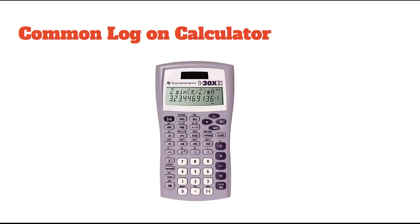Where is that button on the calculator? On this TI calculator, right below the second button in the upper left-hand corner, there is a LOG button. That is the common log button. That button does not have a base on it, and LOG stands for logarithm. So anytime you want to do a common log, use that button, type in the number that you want to take the log of, and it'll give you the answer.